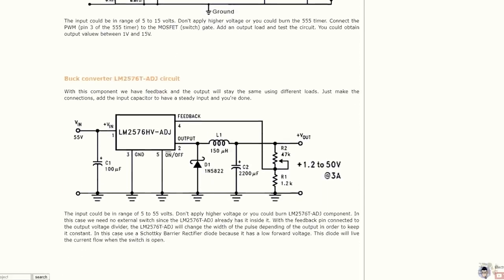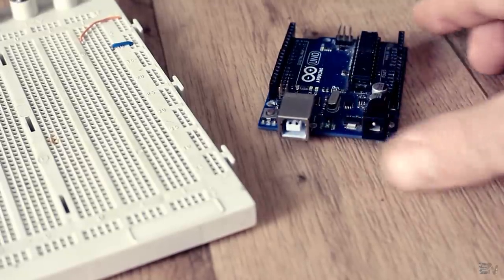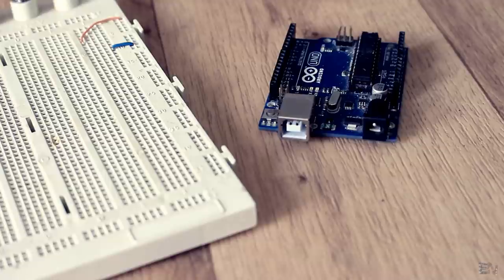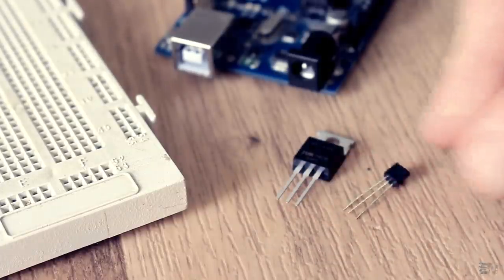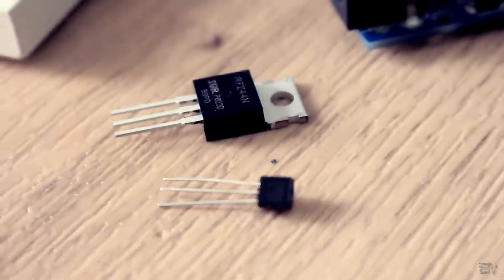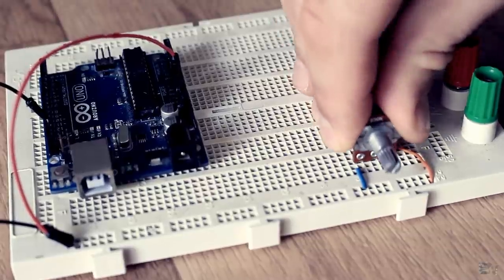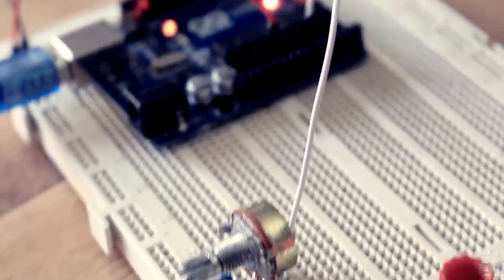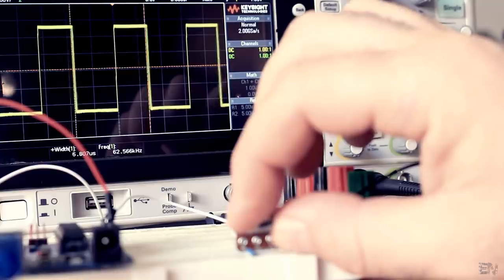To better understand how this works, I will mount this circuit using an Arduino to create the switch signal. The switch will be an IRFZ 44N MOSFET with a small BJT at the gate as a driver. I will read the value of this potentiometer and depending on that value, I will map the duty cycle of the pulse to a lower or higher value as you can see here on my oscilloscope.